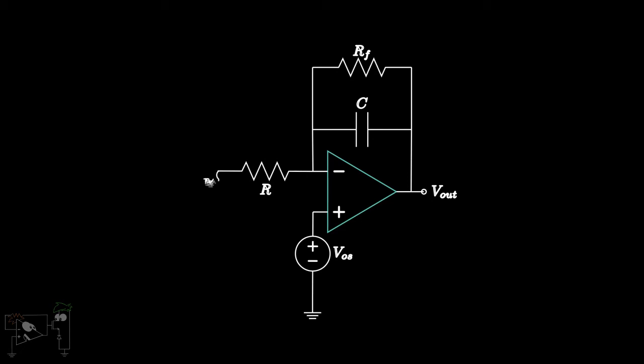Let's switch off our input for now. This will give us an idea of how the circuit behaves with just VOS present. VOS has a constant DC value. The capacitor hence acts like an open circuit as it presents high impedance to low frequencies.